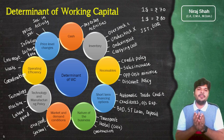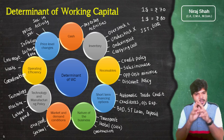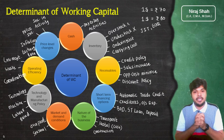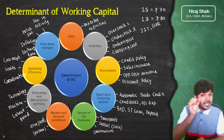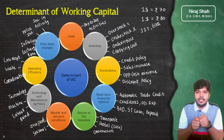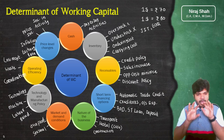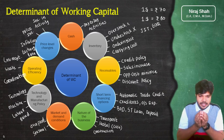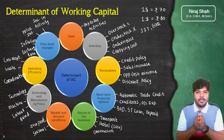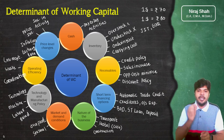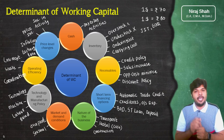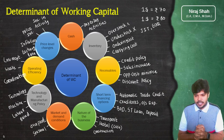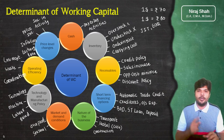एक तरीका समझें किसी भी theory topic को discuss करने का — मुझे circular motion graph बहुत ज्यादा पसंद है। Exam से पहले किसी भी theory topic का revision करते समय मैं circular motion में main points लिख देता हूँ, और बाहर के circle में main points को stretch करने के लिए जो चीजें लिखनी पड़ेंगी वो arrows या dashes बनाकर लिखता हूँ। इससे बहुत clear idea आ जाता है। तो ये थे determinants of working capital।